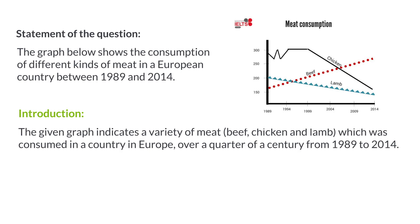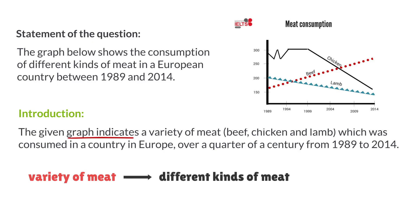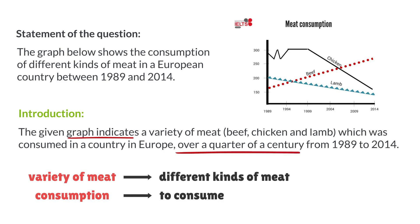Pay attention to how we have paraphrased. Instead of 'the graph below shows,' we have said 'the given graph indicates a variety of meat' instead of 'different kinds of meat.' Consumption has been converted to its verb form, 'to consume.' Since the change took place during a period of 25 years, we have mentioned 'over a quarter of a century.' So next time when you write an introduction, pay attention to these points. If you want to learn more about how to write an introduction, click the link above on how to write an introduction to task one questions.